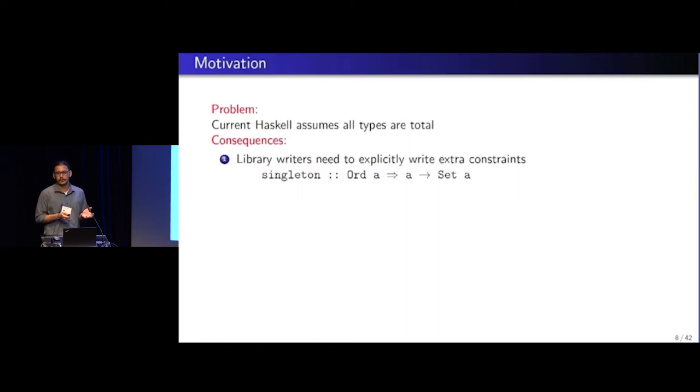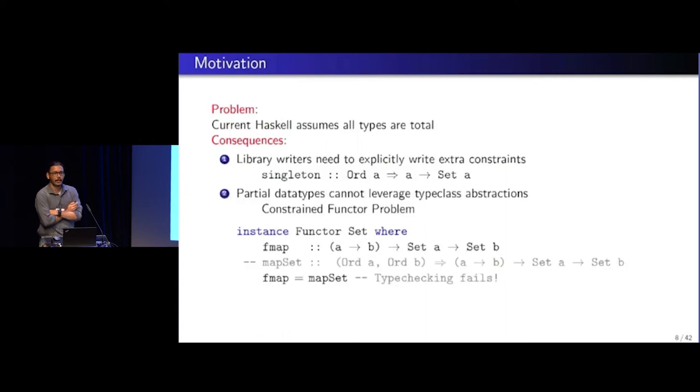You would hide the data constructors and then define smart constructors or functions with explicit constraints that make sure that you don't violate the properties of the partiality of the data. Which is somewhat annoying, but we can live with that, I guess.